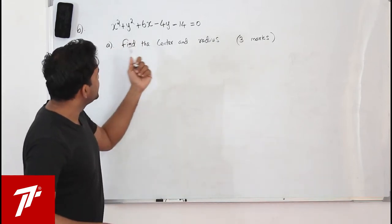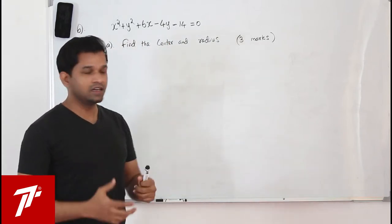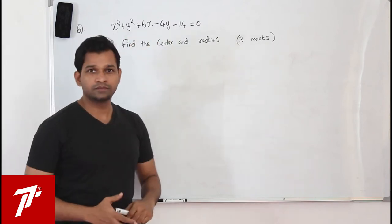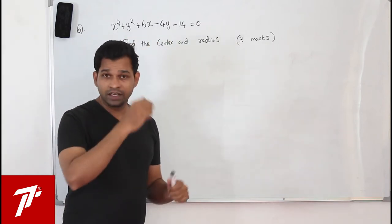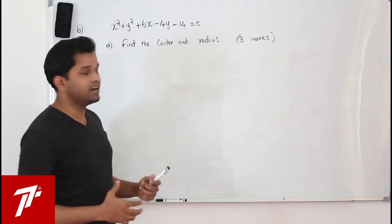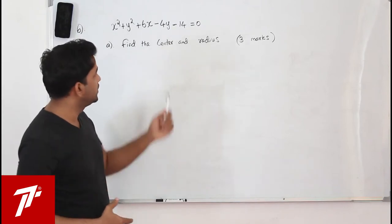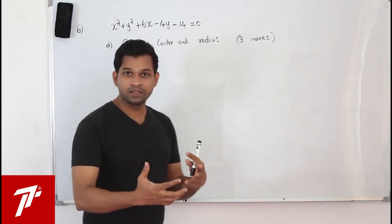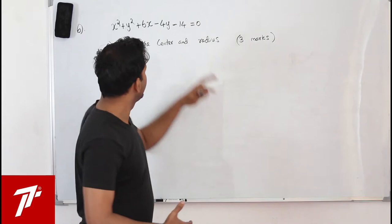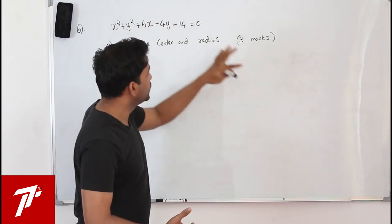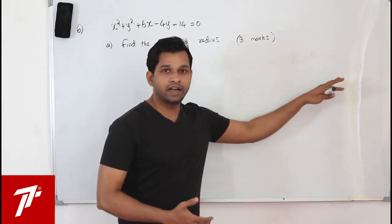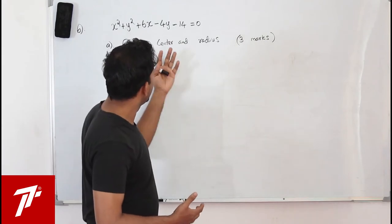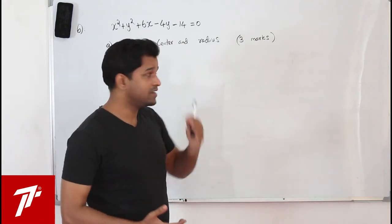You need to find the center and radius of the given circle. There are two methods: the first is by using the completing the square method, where you change this equation into two quadratics of x and y and find the center and radius.